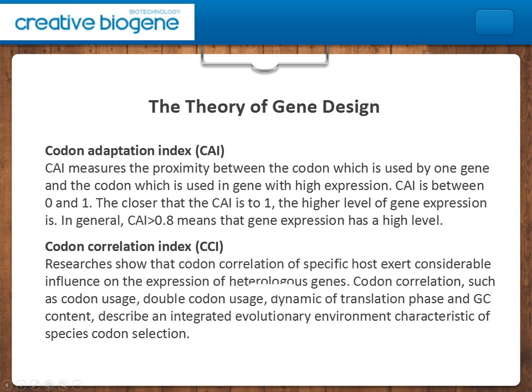Codon Correlation Index. Research shows that the codon correlation of a specific host exerts considerable influence on the expression of heterologous genes. Codon correlation includes codon usage, double codon usage, dynamics of translation phase, and GC content, describing an integrated evolutionary environment characteristic of species codon selection.